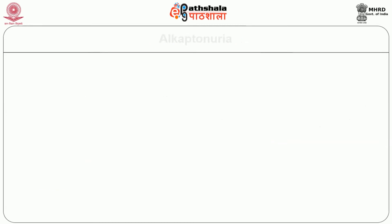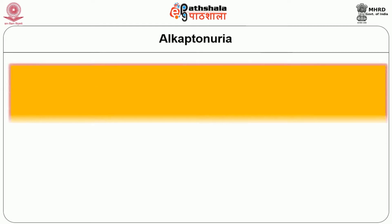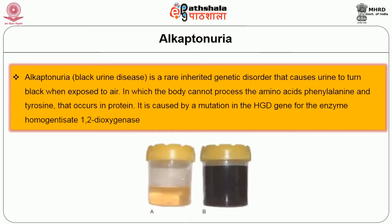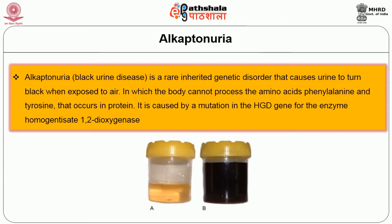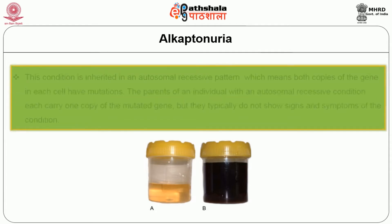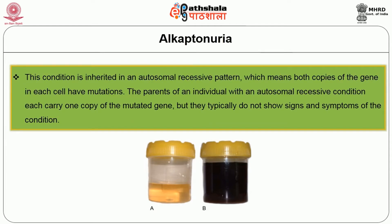The second disorder is Alcaptonuria, also called Black Urine Disease. It is a rare inherited genetic disorder that causes urine to turn black when exposed to air, in which the body cannot process the amino acids phenylalanine and tyrosine. It is caused by a mutation in the HGD gene for the enzyme homogentisate 1,2-dioxygenase. This condition is inherited in an autosomal recessive pattern, meaning both copies of the gene in each cell have mutations.